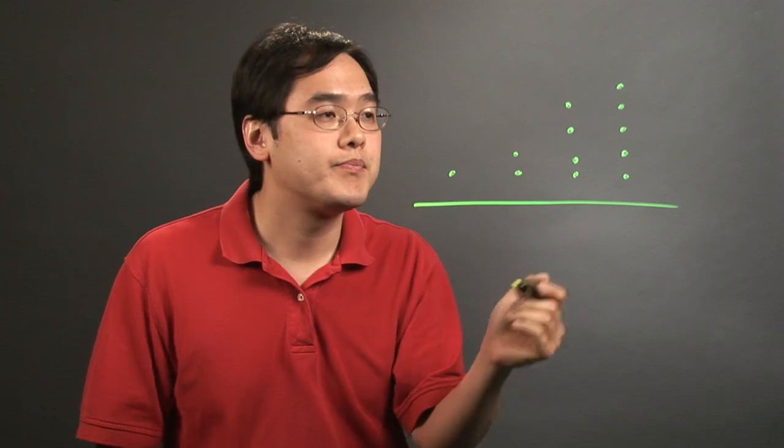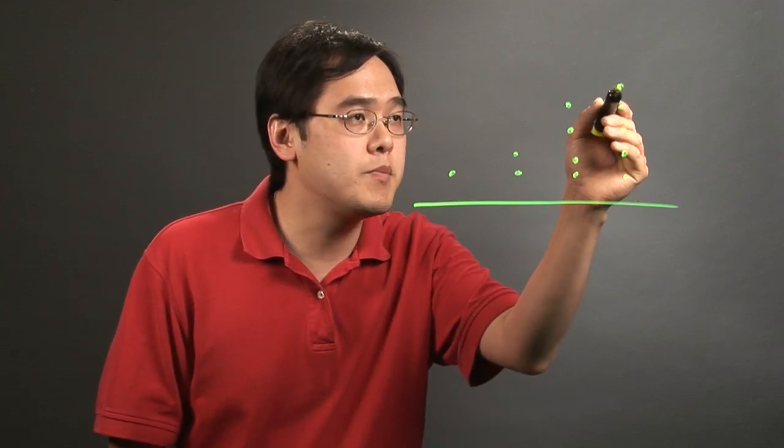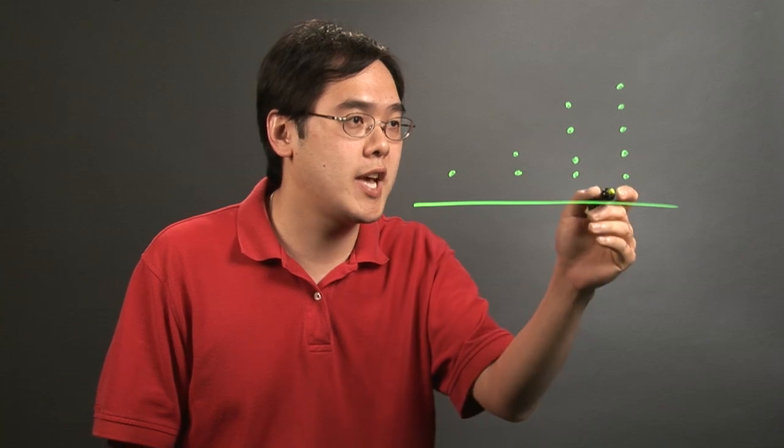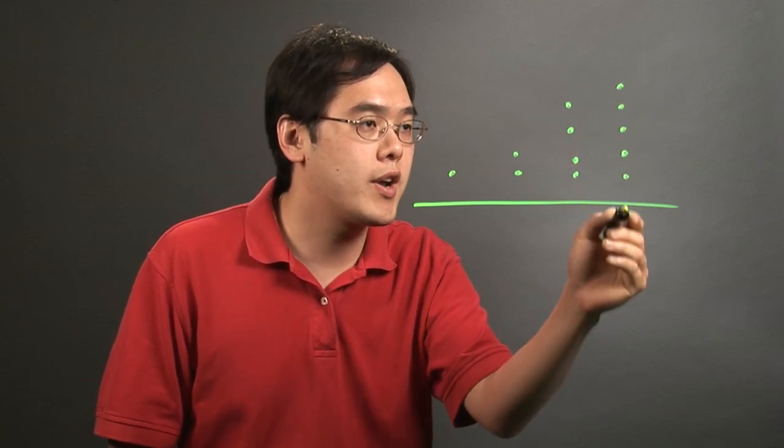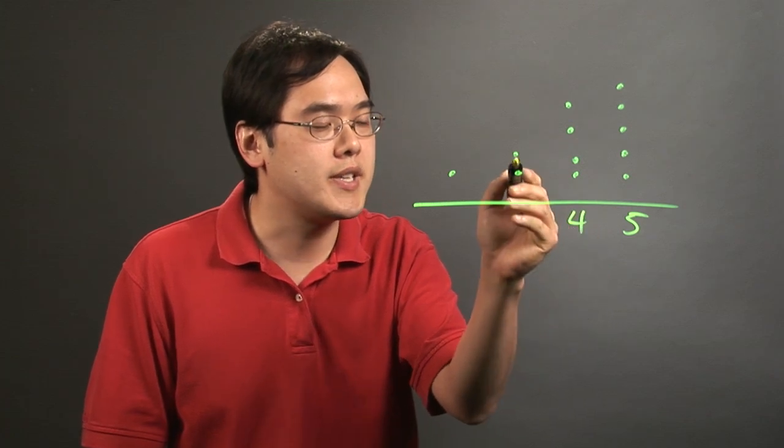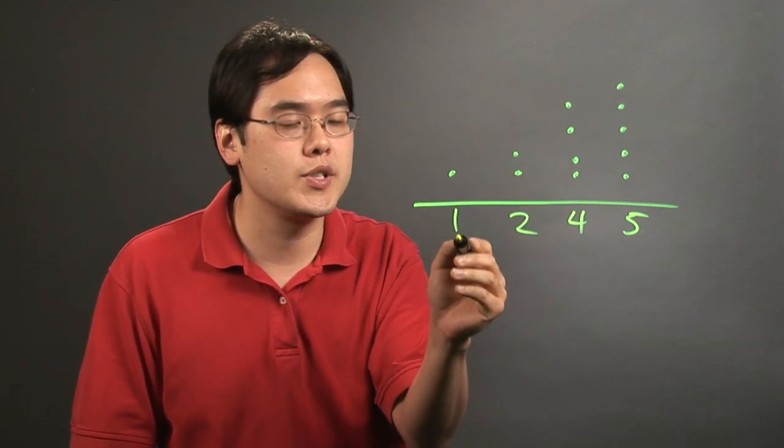Now depending on the category, generally speaking each dot represents one observation. So for example this particular category got observed five times. This particular category got observed four times and this had a frequency of two and this had a frequency of one.